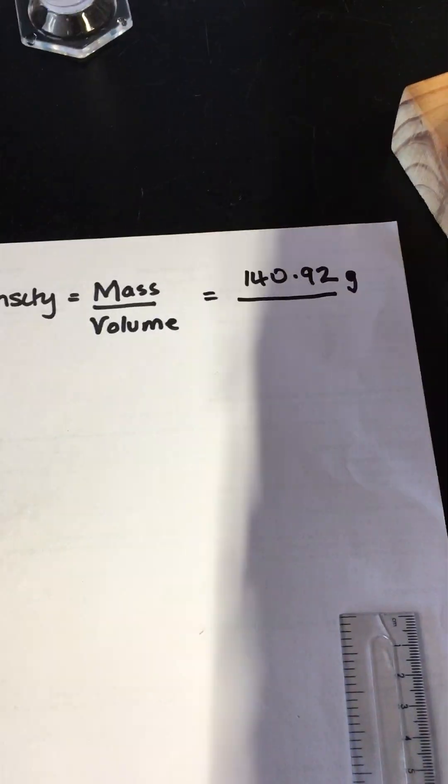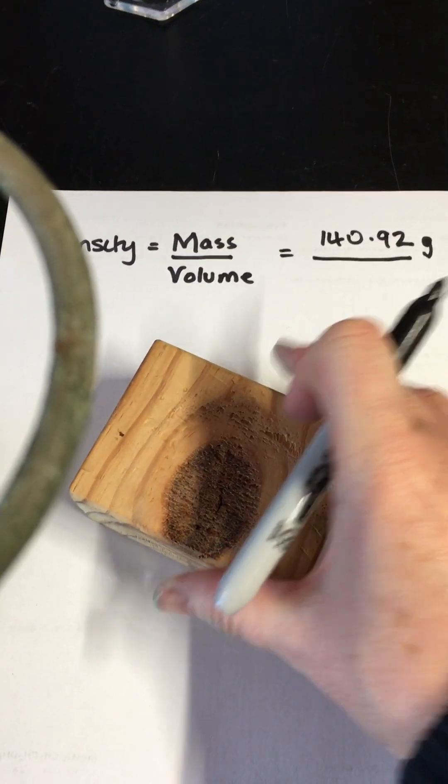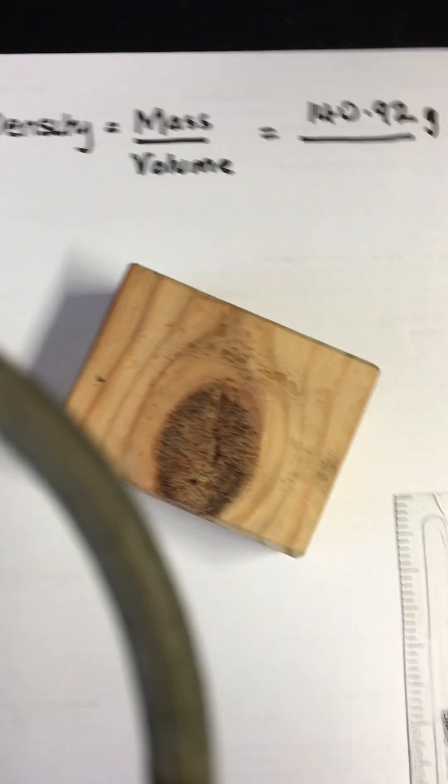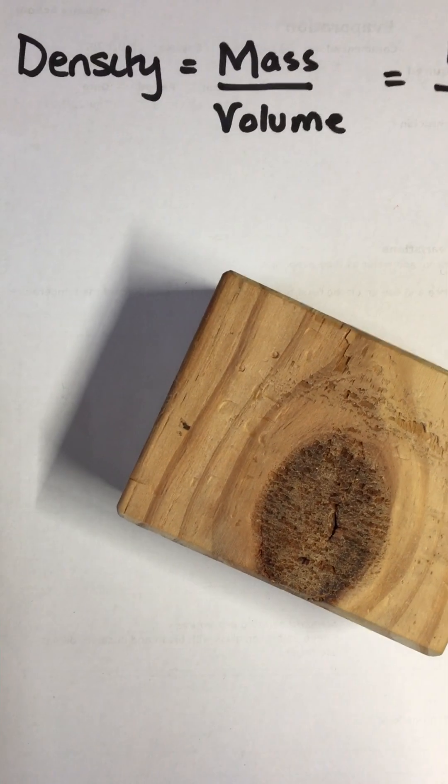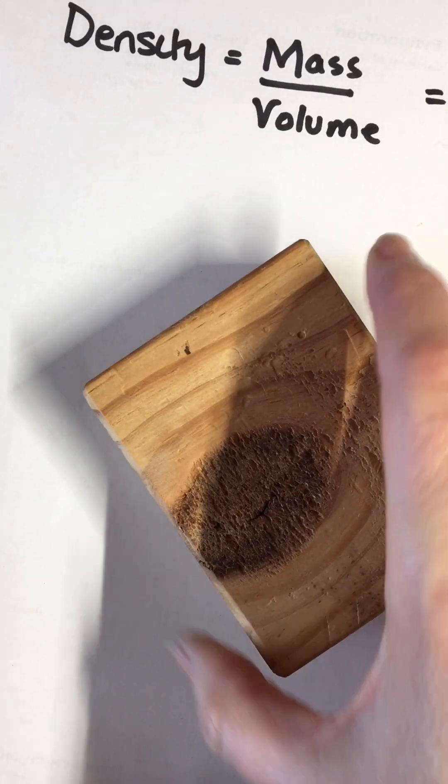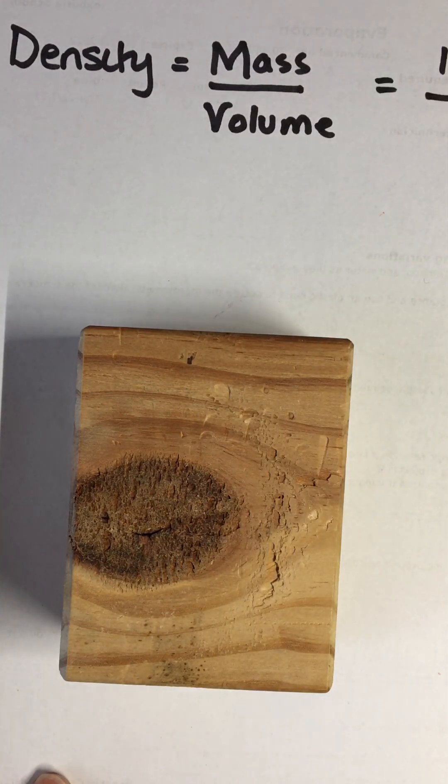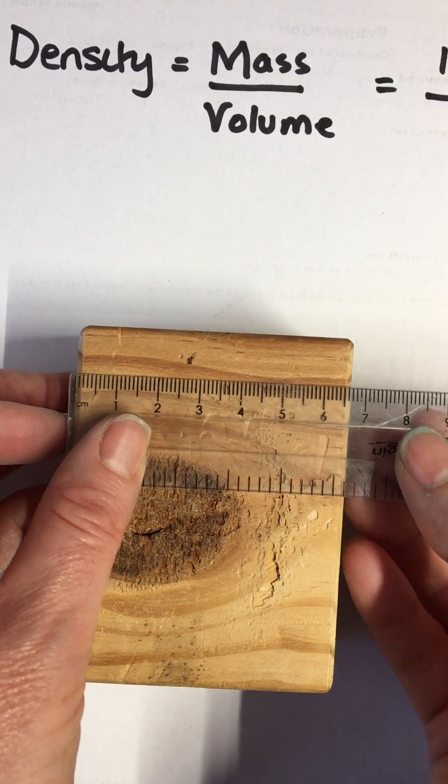Now we need to work out the volume of our regular object. We're going to measure its dimensions using a ruler with millimeters.